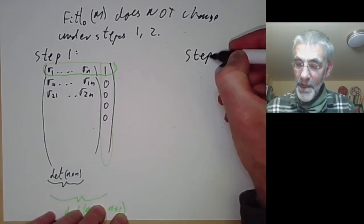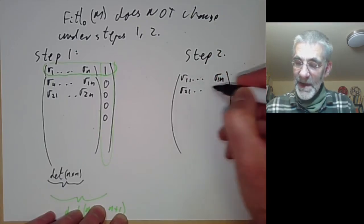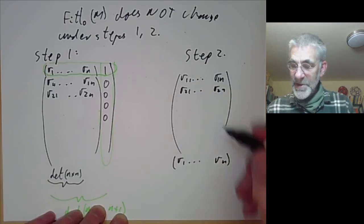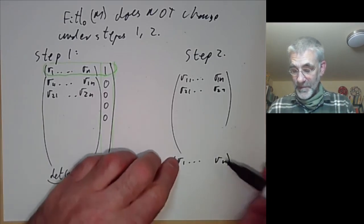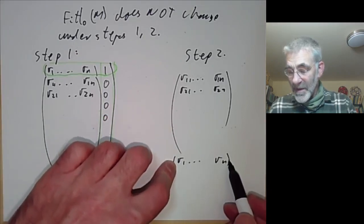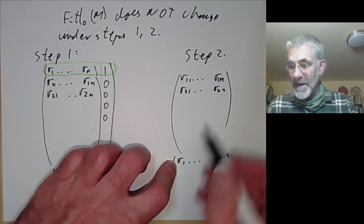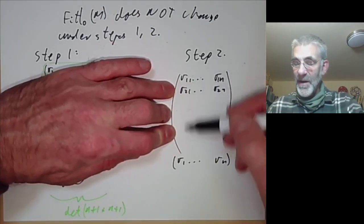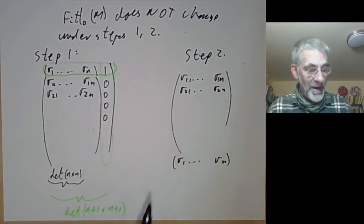For step two: we have our old matrix, and we're adding new relations that are linear combinations of old ones. This doesn't change the determinants, because if you take N rows of the new matrix including this new row, you get a determinant that is a linear combination of determinants from N rows of the original matrix. So both step one and step two don't change the ideal generated by all the determinants. Therefore the zeroth fitting ideal of M doesn't depend on the presentation.